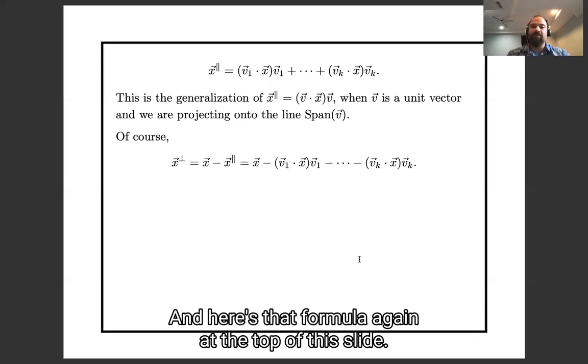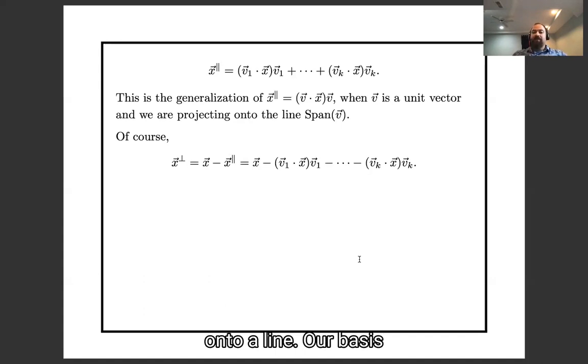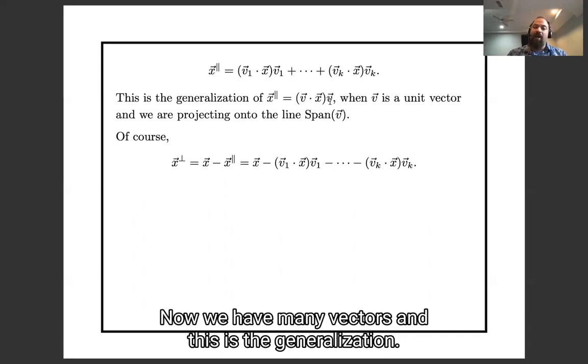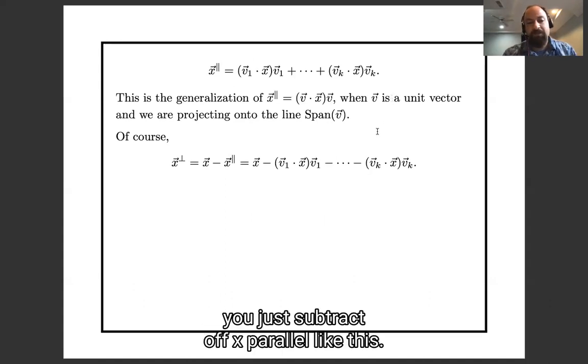And here's that formula again at the top of the slide. So back in the case we were just projecting onto a line, our basis had just one vector in it, there was only v1, and we had v dot x times v. Now we have many vectors, and this is the generalization. And of course, if you want x perpendicular, you just subtract off x-parallel like this.